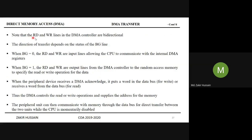Note that the read and write lines in the DMA controller are bi-directional. The direction of transfer depends on the status of the BG line. When BG is 0, the read and write lines are input lines, allowing the CPU to communicate with the internal DMA registers. At this stage, there is no I/O request, which is why BG is 0.